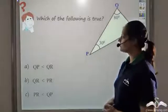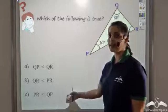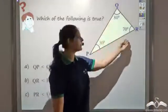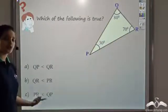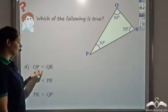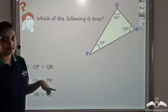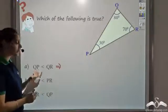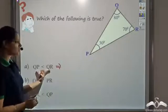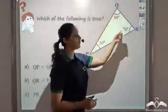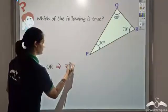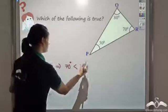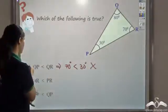Can you answer this question: in triangle PQR, angle P is 30 degrees, angle Q is 80 degrees, and angle R is 70 degrees — which of the following is true? Option A says QP is less than QR. If so, the angle opposite to QP — which is 70 degrees — should be less than the angle opposite to QR — which is 30 degrees. Since 70 is not less than 30, option A is incorrect.